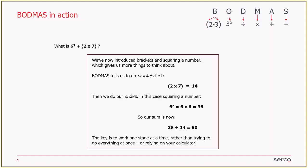In this case, the order is asking us to do 6 squared. Any idea how you square a number? Multiply by itself. Fantastic. So 6 squared is simply 6 times 6, it's 36. And then if we go back to our calculation, we've now got 36 add 14, so our answer is 50. We're not going left to right here. We're doing our brackets, then we're doing our order, and then we're putting everything back together.